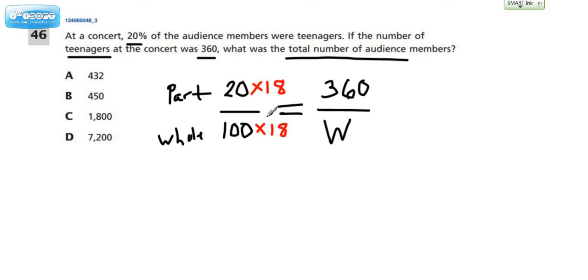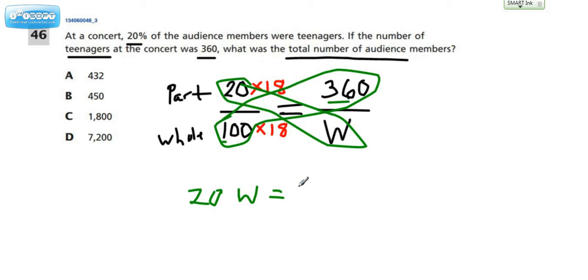Now, if you weren't able to figure out what this number was here, you could have always just proceeded with the cross-products. If you did the cross-products, you would have gotten 20 times W equals, and then you would have done 100 times 360. Now, we know that 1 times 36 is 36, and then you would have put on 1, 2, 3 zeros.